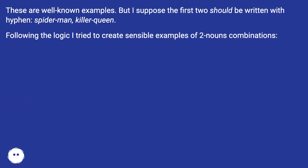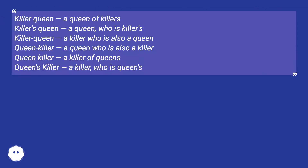Following the logic, I tried to create sensible examples of two-noun combinations. Killer Queen: a queen of killers (killers' queen); a queen who is a killer's (killer queen); a killer who is also a queen (queen killer); a queen who is also a killer (queen killer); a killer of queens (queen's killer); a killer who is queen's.